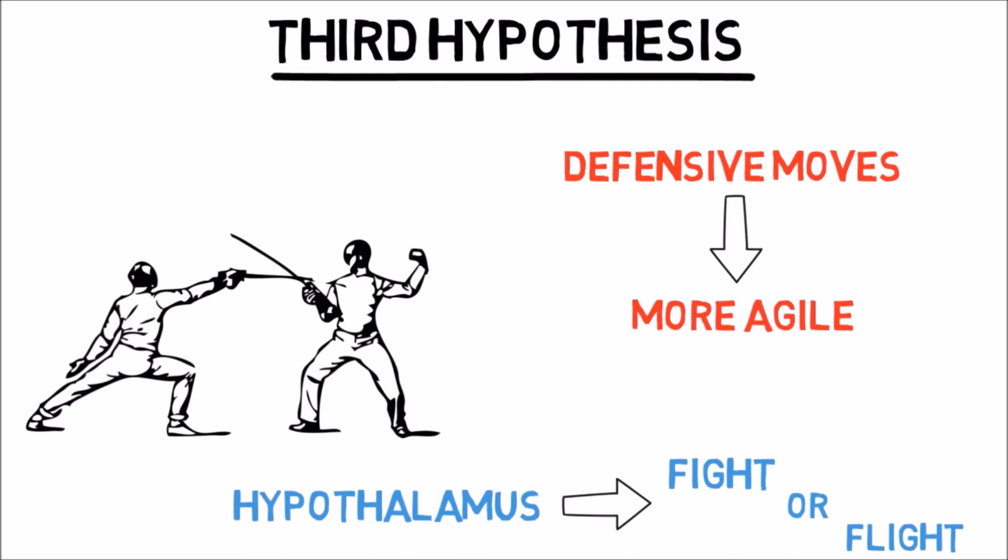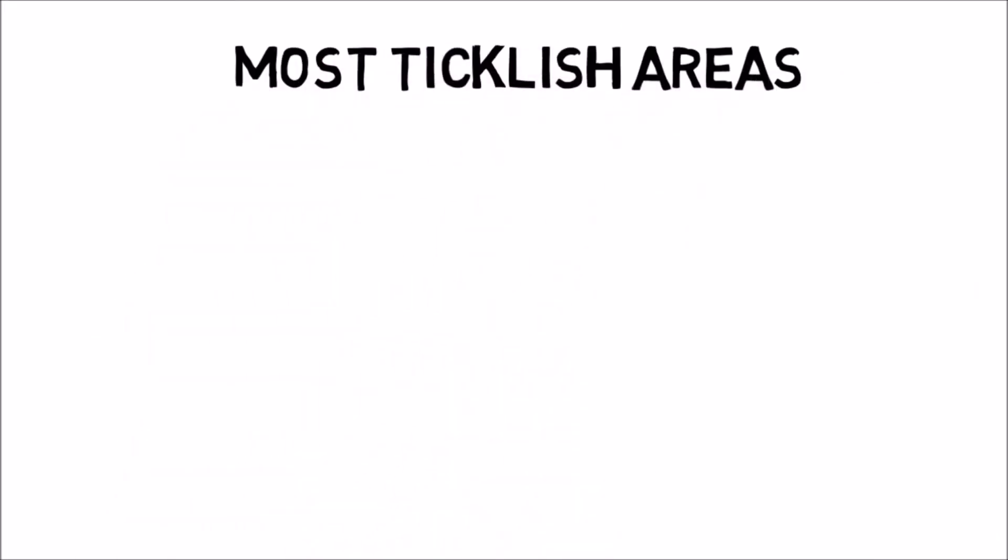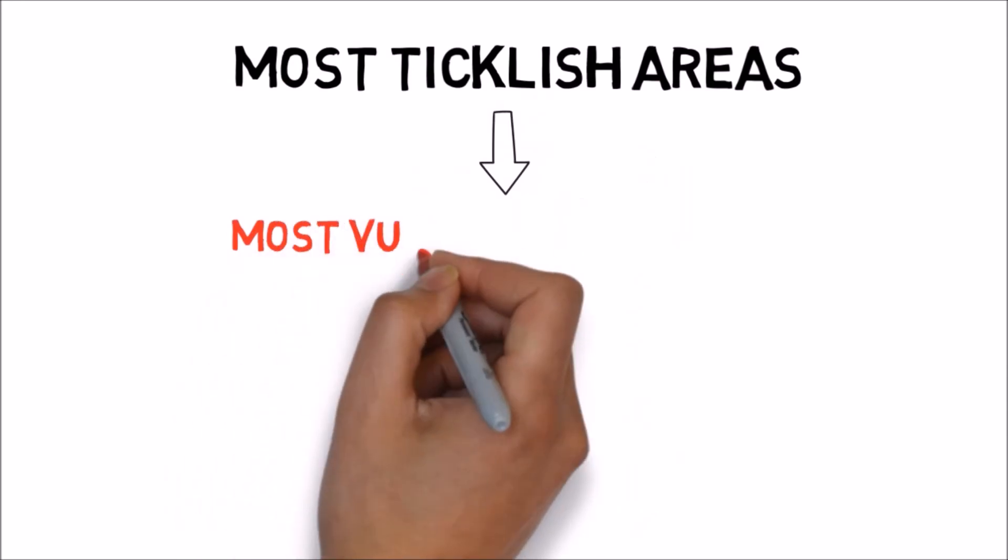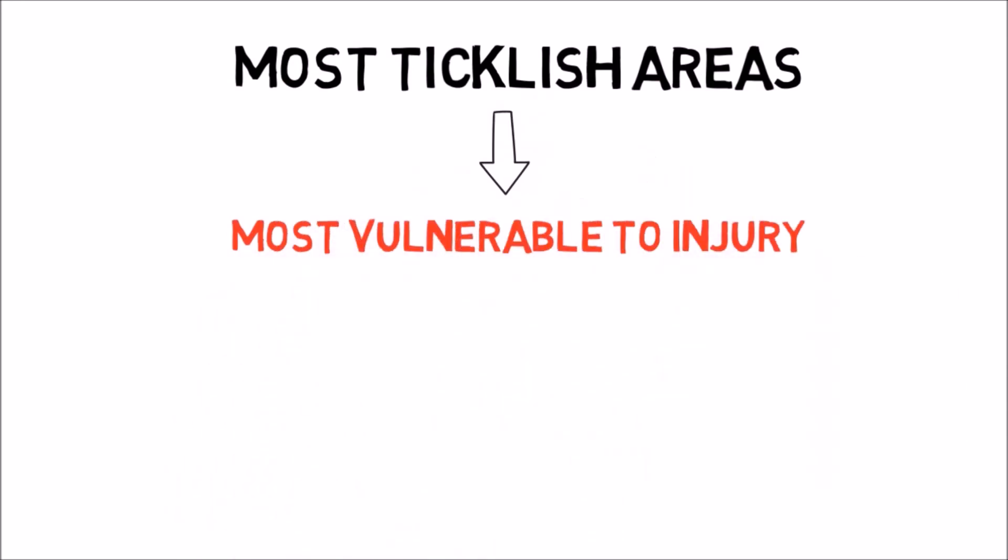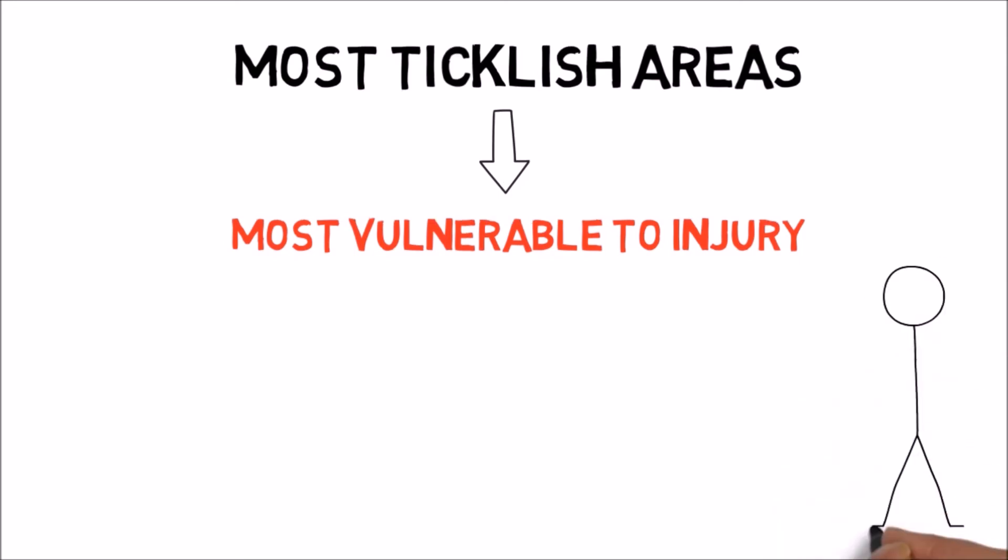Evolutionary biologists and neuroscientists have backed up the third theory with some credible evidence. The areas of the human body that are typically the most ticklish are the same ones that are most vulnerable to injury. Your underarm contains the axillary vein and artery, and it also allows unimpeded access to your heart, since the ribcage no longer provides protection to the chest cavity at the underarm. The same goes for another ticklish spot, the neck, without protective bones in either place.